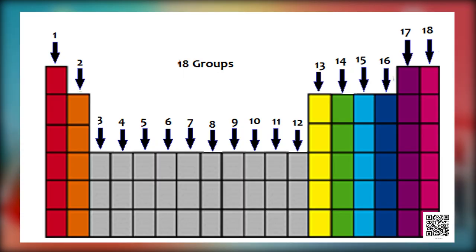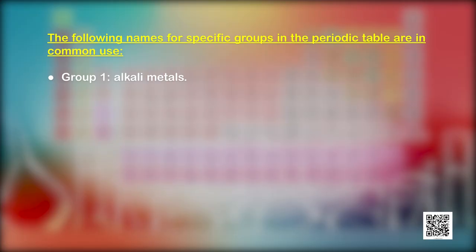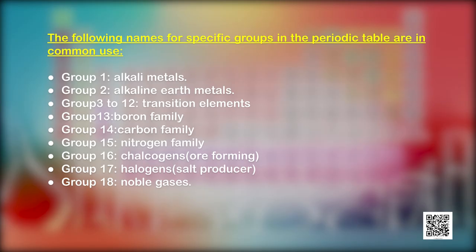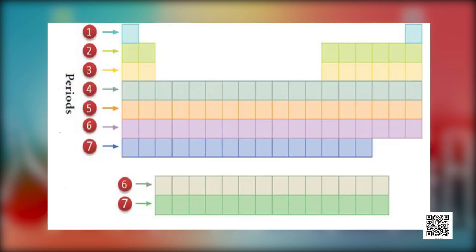Please note the following important features of the modern periodic table. Groups are numbered from 1 to 18, and each group consists of elements having the same outer shell electronic configuration. Group 1 are the alkali metals; Group 2 are the alkaline earth metals; Groups 3 to 12 are the transition elements; Group 13 is the boron family; Group 14 is the carbon family; Group 15 is the nitrogen family; Group 16 are chalcogens (ore-forming elements); Group 17 are halogens (salt-producing elements); and Group 18 are noble gases.